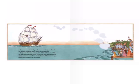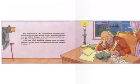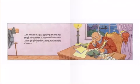America won its independence, and Benjamin Franklin helped write the peace treaty with England. Benjamin Franklin returned to Philadelphia in 1785 as an American hero. When his ship was about to dock, cannons were fired in his honor, bells were rung, and a crowd waited to greet him. Two years later in 1787, a constitution was being written to govern the new United States. Benjamin Franklin was the oldest delegate to the Constitutional Convention — a delegate is someone chosen to help write it — and he was 81 years old.